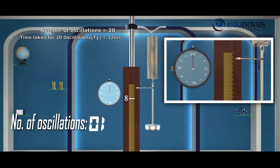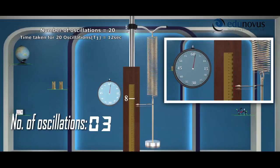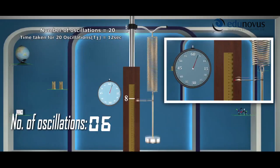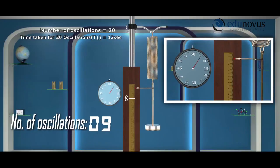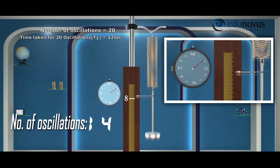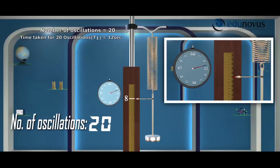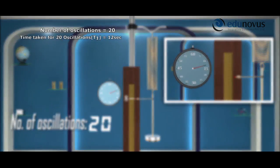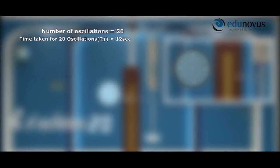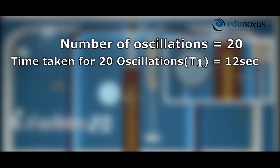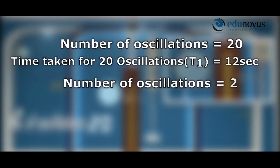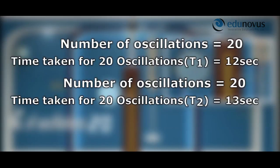Once again, measure the time taken for 20 oscillations. The time taken is 13 seconds. Note it down as T₂ in the observation table. Take the mean of T₁ and T₂: T = (12 + 13)/2 = 12.5 seconds.